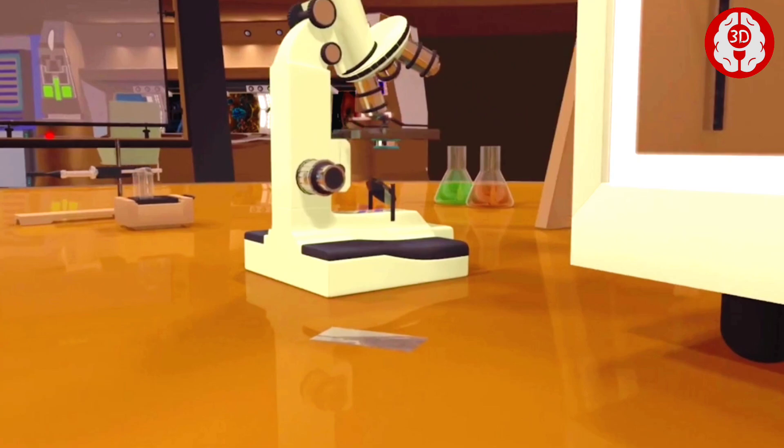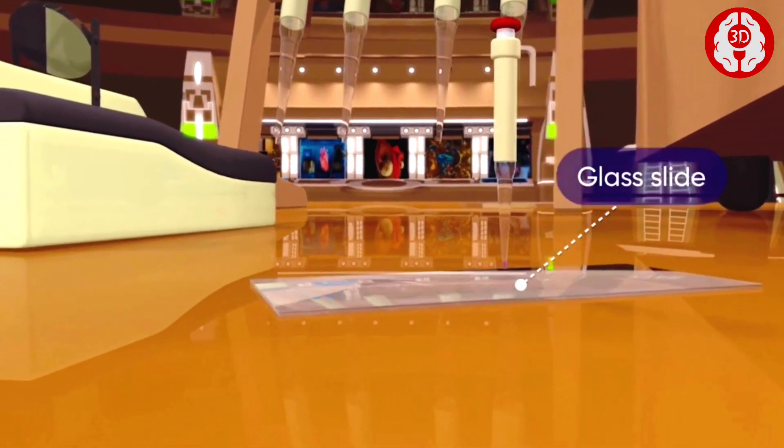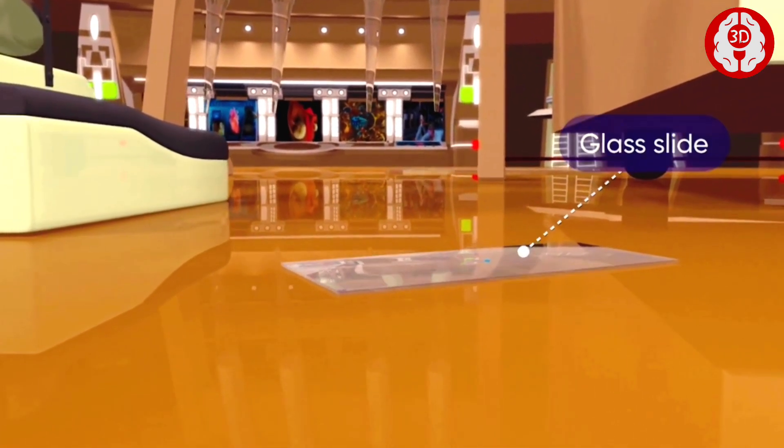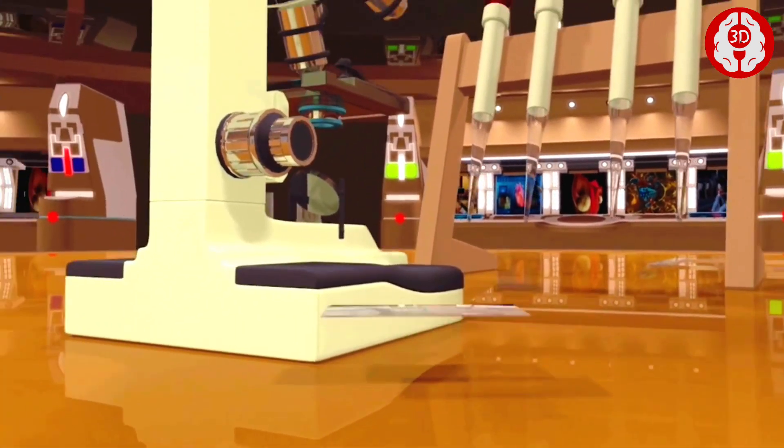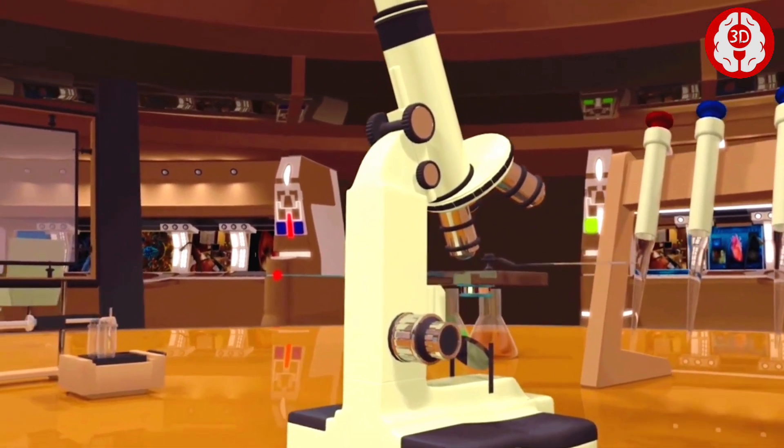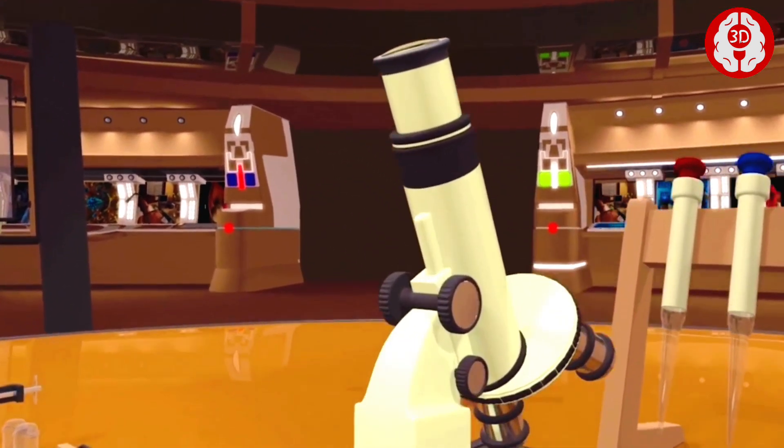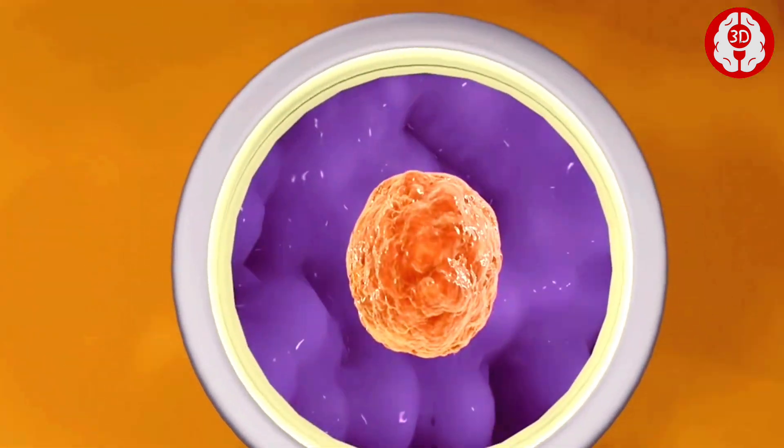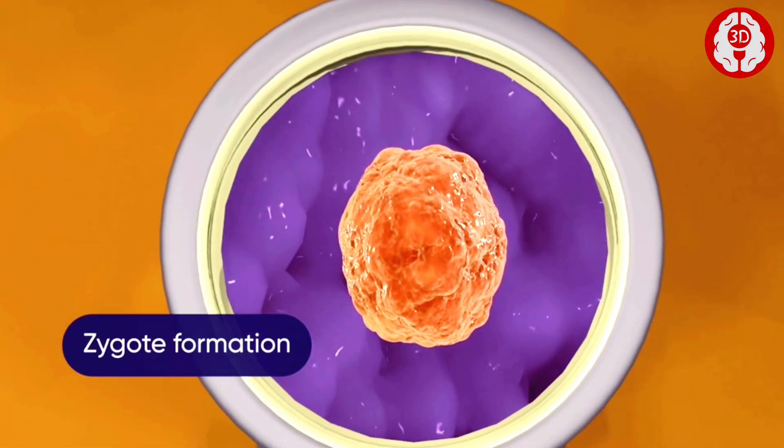The test tube mixture is then taken on a glass slide to examine under a microscope. The microscope view confirms the zygote formation.